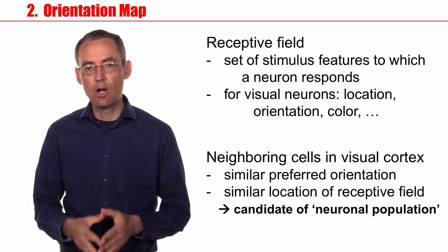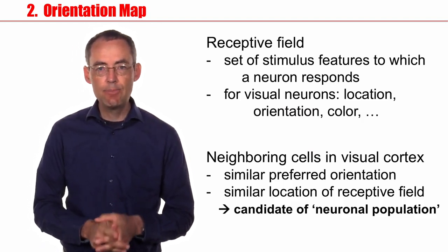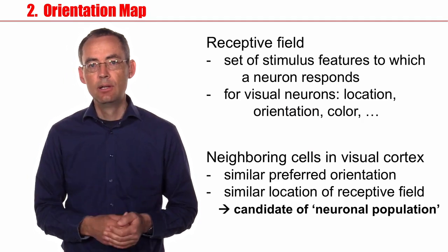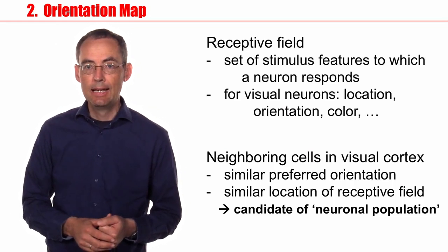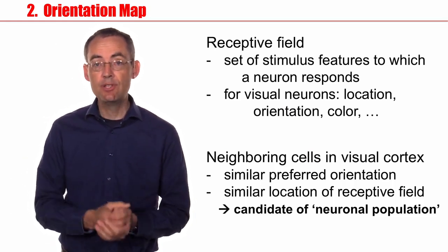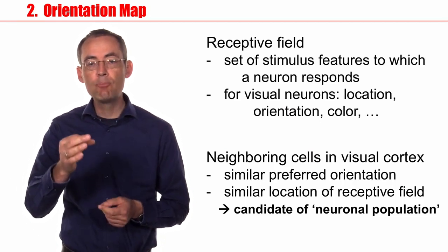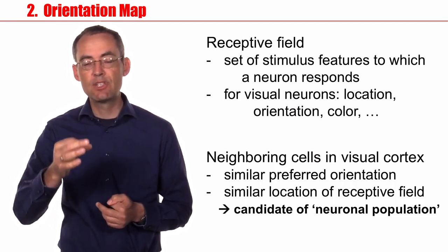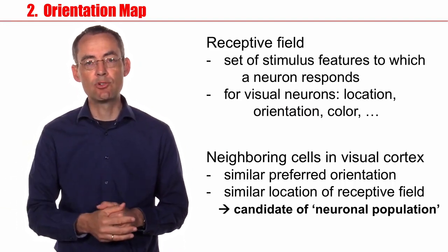Now, for the rest of today's lecture, the point is that neighboring cells in visual cortex have similar preferred orientation. They have a similar location of their receptive fields, and there are quite a few of these, there are many of these cells. So local neighborhoods of cells form populations of cells with similar properties, and therefore they are candidates of neuronal populations.